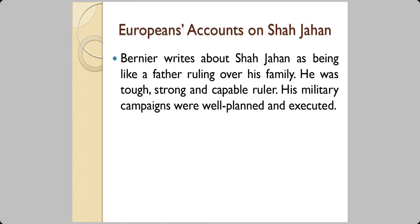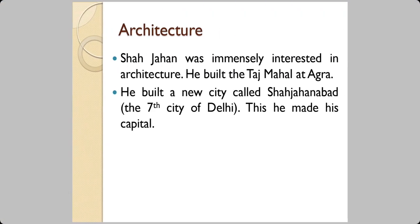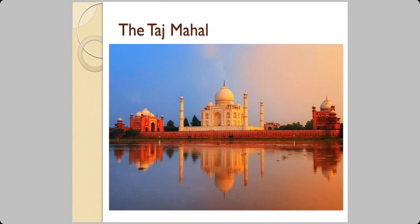Bernier writes about Shah Jahan as being like a father ruling over his family — a tough, strong, and capable ruler whose military campaigns were very well planned and executed. He is known for architecture and building gardens. He built the famous Taj Mahal at Agra, and even built a new city named after himself — Shahjahanabad — which became the seventh city of Delhi and his own capital. This is a very beautiful view of the Taj Mahal.